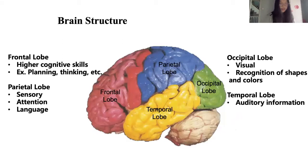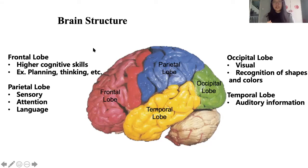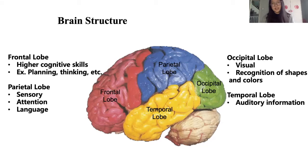The cerebral cortex is the outermost layer covering the cerebrum, often referred to as gray matter because of its gray color. It has a wrinkled appearance, and those curves allow for the inclusion of many more neurons. We divide the cerebral cortex into four different lobes. The first is the frontal lobe — it's at the front of the brain, shown in red here — and its function is higher cognitive skills such as planning and thinking.